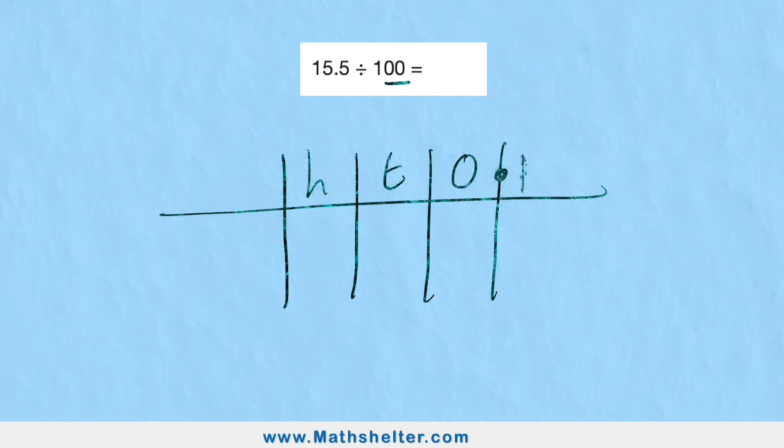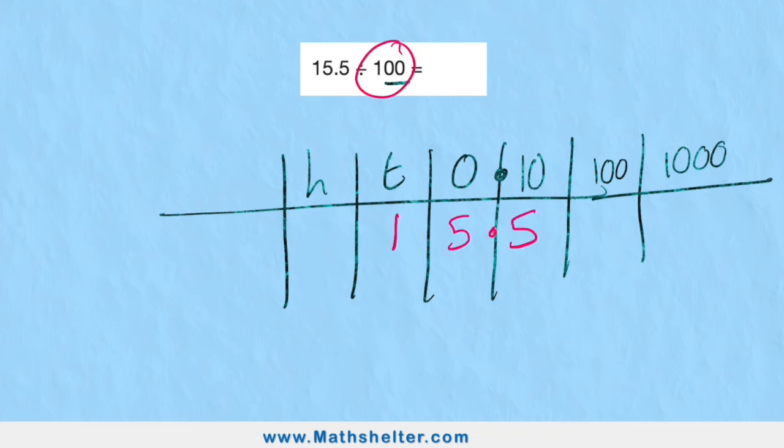15.5. I need ones, tens, hundreds, put by my decimal, tenths, one hundredths, one thousandths. I'm ready to begin. 15.5 is one ten, five ones, point five.